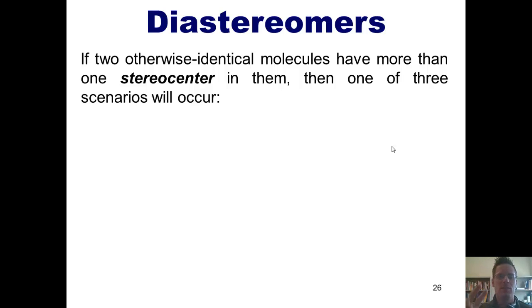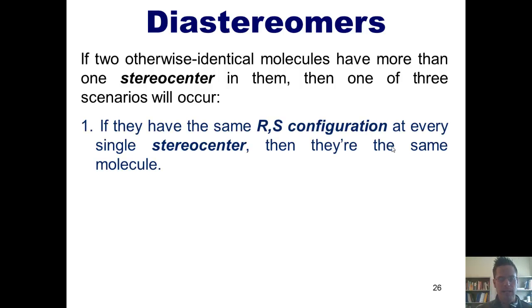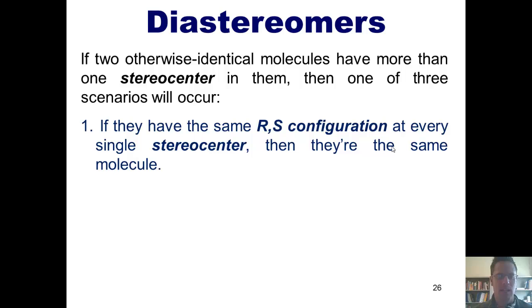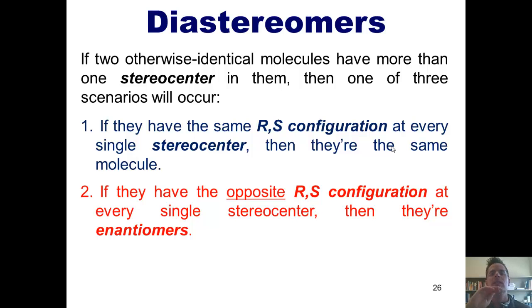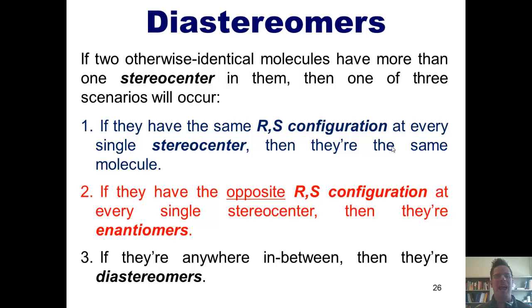So here's the take home. If you have two otherwise identical molecules that have more than one stereocenter, then one of three scenarios will occur. One: if they have the same RS configuration at every single stereocenter, then they're the same molecule. Two: if they have the opposite RS configuration at every single stereocenter — R for S at every position — then they're enantiomers. And three: if they're anywhere in between, then we call them diastereomers.